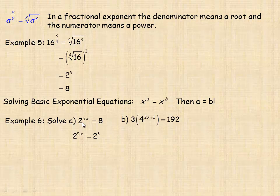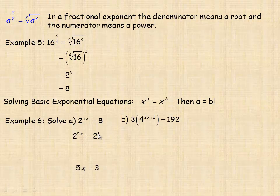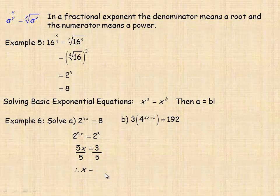In example six, we solve two to the five x equals eight. We rewrite eight as two cubed so both sides have the same base. Then we set the exponents equal: five x equals three. Dividing both sides by five gives x equals three-fifths.